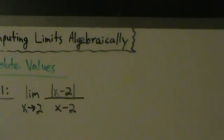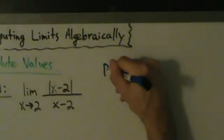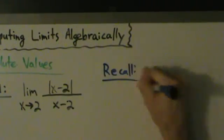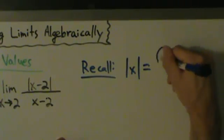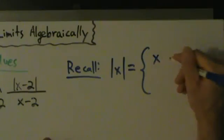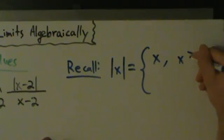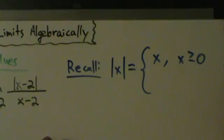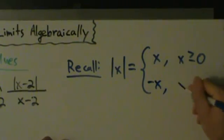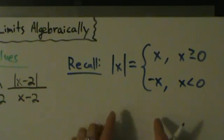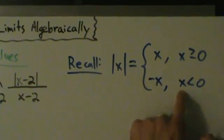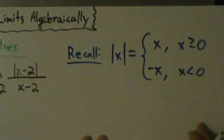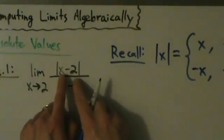Before we do that, we need to remember something. Let's recall the definition of the absolute value function. Absolute value of x equals just plain old x if x is greater than or equal to 0, and it's negative x if x is less than 0. Now remember, this doesn't apply to just x — it applies to anything. So instead of x, what do we have in our case? We have x minus 2.